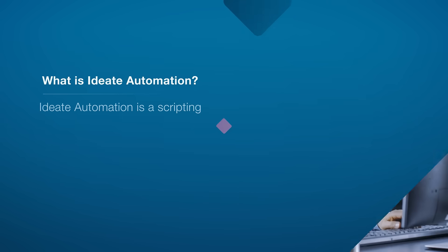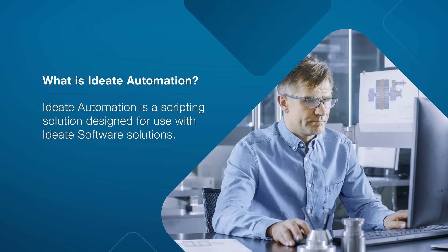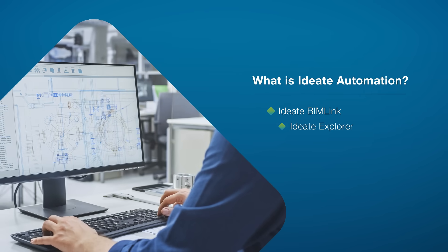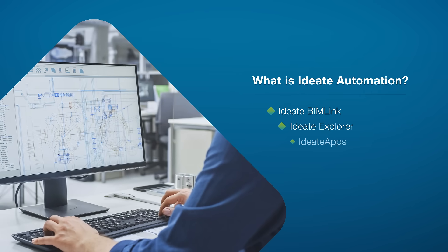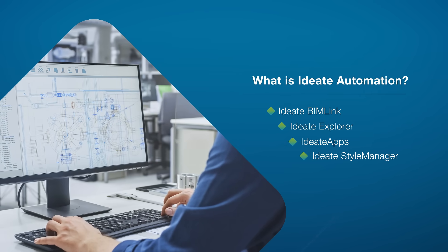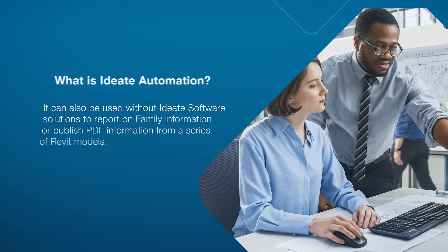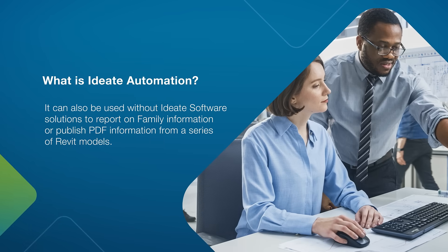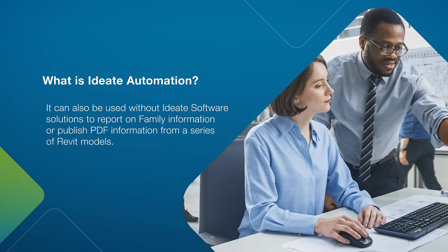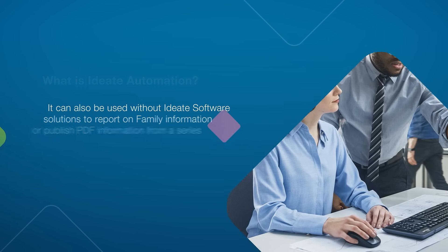ID8 Automation is a scripting solution designed for use with ID8 software solutions such as ID8 BIM Link, ID8 Explorer, ID8 Apps, or ID8 Style Manager. It can also be used without ID8 software solutions to report on family information or publish PDF information from a series of Revit models.